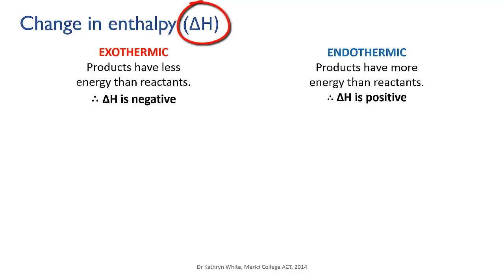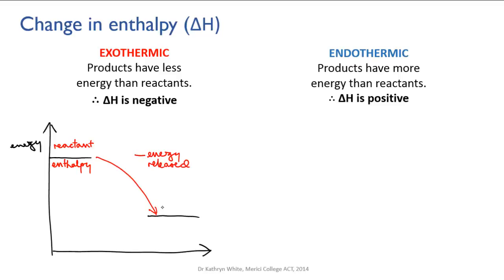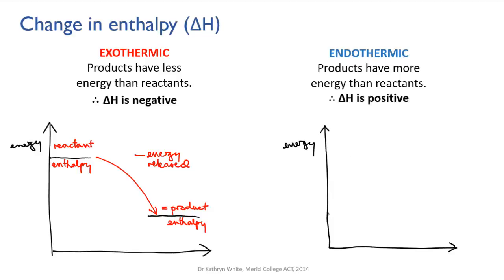The symbol for change in enthalpy is delta H. H is the symbol for enthalpy, and the capital Greek letter delta — the triangle — means change in or difference between. So a negative delta H value means that energy was lost during the reaction, making it an exothermic reaction: reactant enthalpy minus the energy released equals product enthalpy. A positive delta H means that energy was gained during the reaction, making it an endothermic reaction: reactant enthalpy plus the energy absorbed equals product enthalpy.